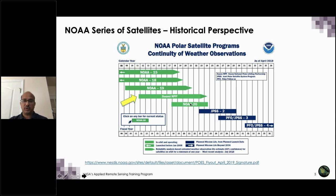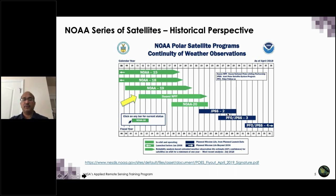There are JPSS-2, 3, and 4 already planned. The key thing to understand is that VIIRS is a continuous mission — the role of VIIRS is to provide continuous measurement from all around the world using polar orbiting satellites. If you are switching to VIIRS from MODIS now, it is a good time because we will have VIIRS data for the next 20 years until 2038, giving us a continuous record.